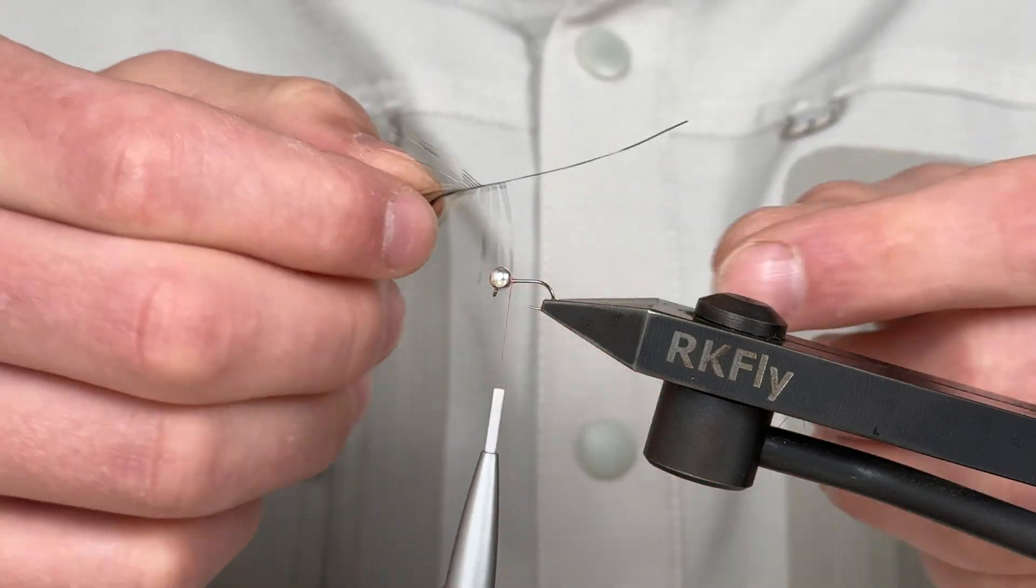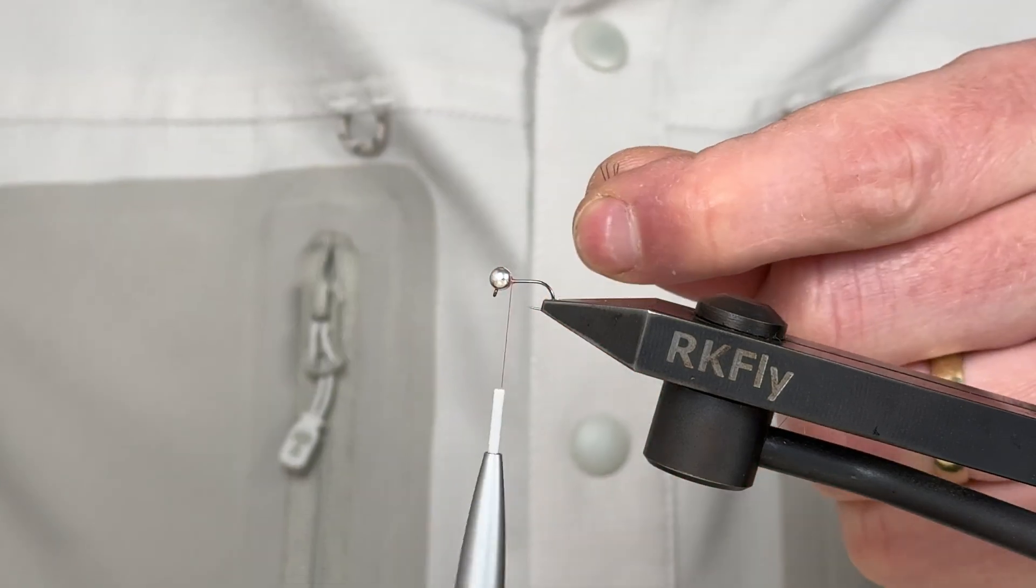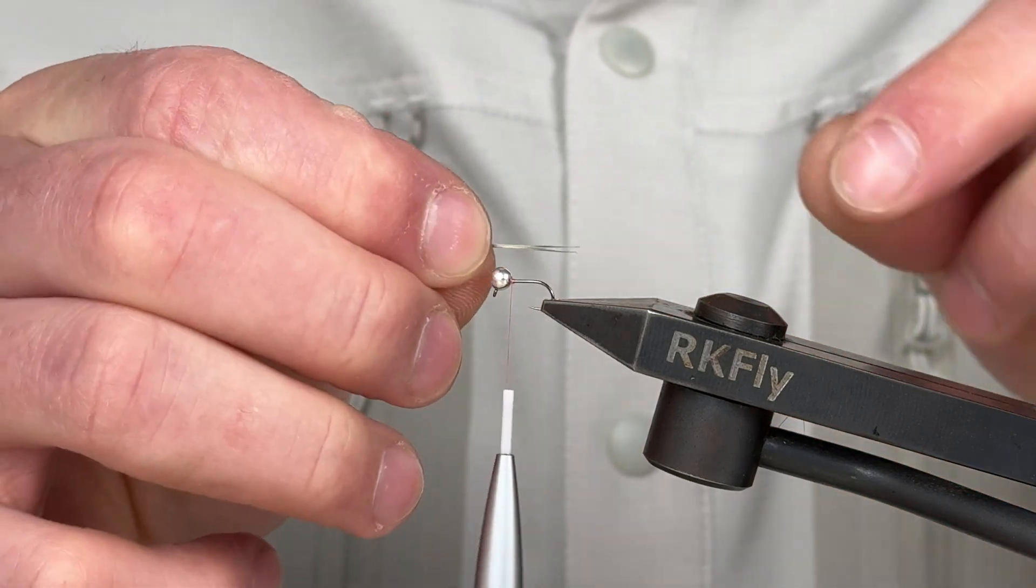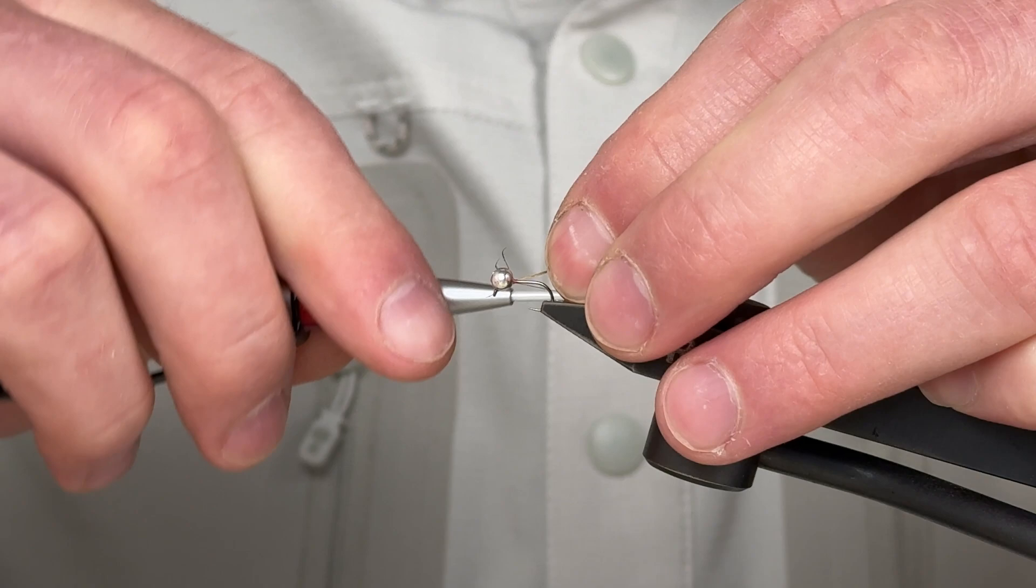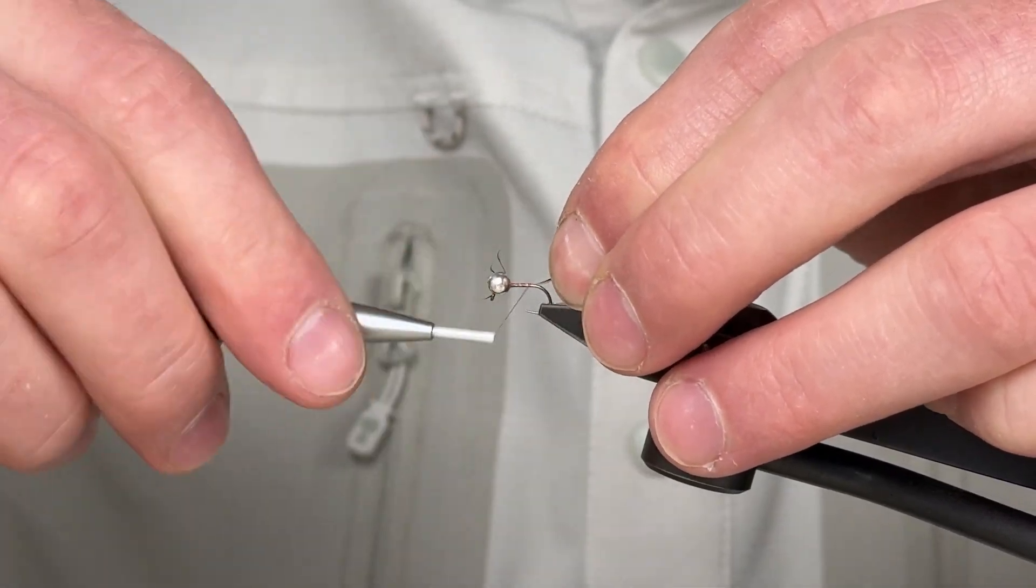We will take a feather from a grizzly cock and prepare three to four segments for the tail of our nymph. Measure the correct size. The length of the tail should match the length of the body. Tie along the hook shank.